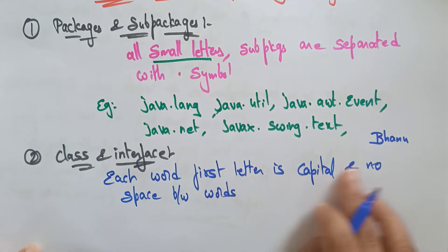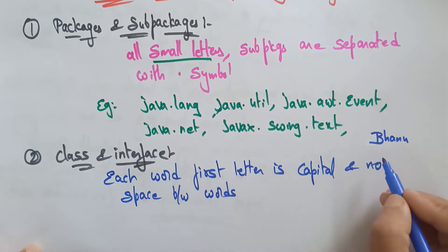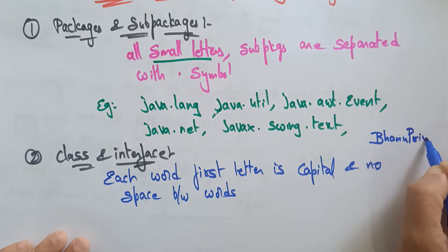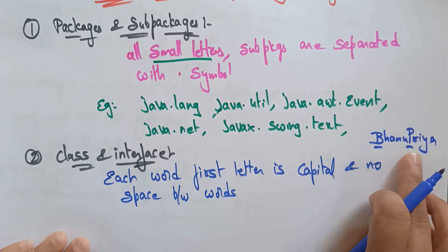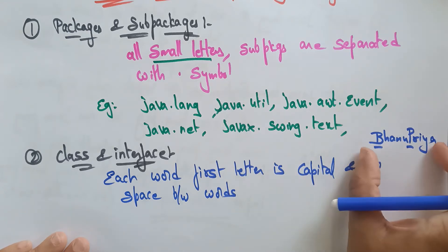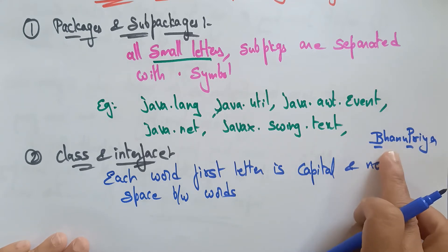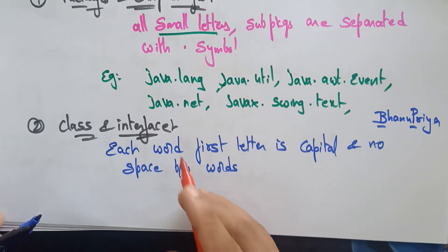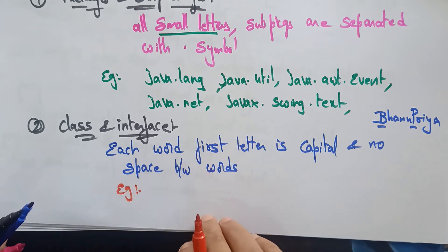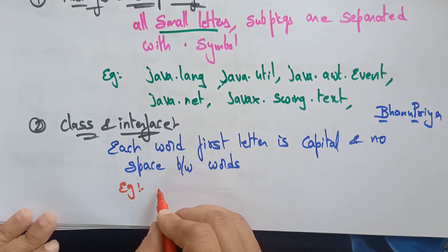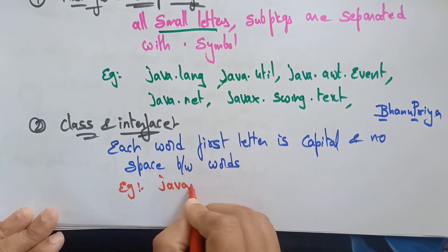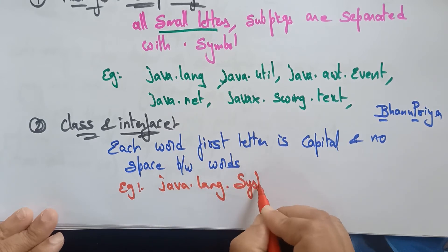So every word's first letter is a capital letter, and don't give spaces. 'Banu' is one word and 'Priya' is another word — not the same. Every word's first letter is capital, so don't give spaces. That is the identification rule for classes and interfaces. For example, in java.lang — java is the package, lang is the sub-package, and System is the class name with 'S' as a capital letter.